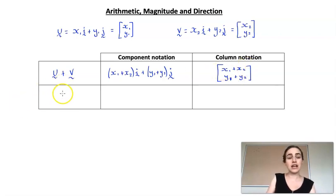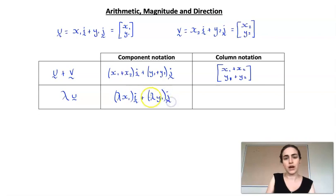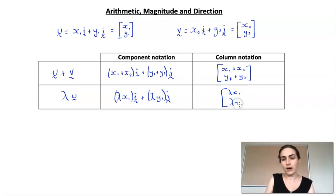The other operation to look at is scalar multiplication. If I've got my lambda, which is my scalar, multiplied by my vector u, then I can multiply each part: lambda x1 i plus lambda y1 j — multiplying each of those coefficients. And in column notation, it would be lambda x1 and lambda y1.